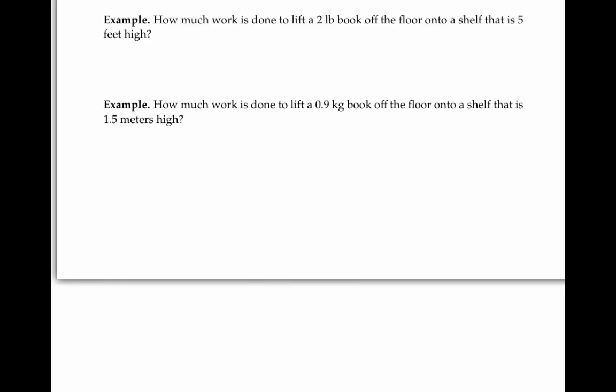As our first example, how much work is done to lift a two pound book off the floor onto a shelf that's five feet high? Well, we know that work is force times distance. And two pounds is already a unit of force, and distance is five feet. So the work done is 10 foot pounds.